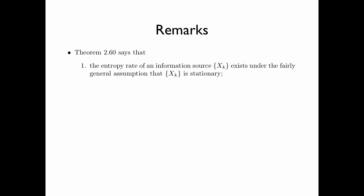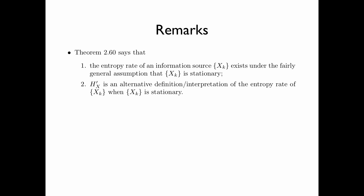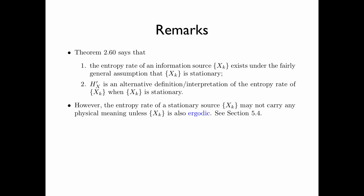The theorem says the following. First, the entropy rate of an information source x sub k exists under the fairly general assumption that x sub k is stationary. Second, the limit H sub x prime is an alternative definition or interpretation of the entropy rate when x sub k is stationary. However, the entropy rate of a stationary source may not carry any physical meaning unless x sub k is also ergodic. For details, please see section 5.4 in the textbook.